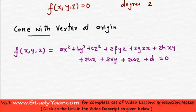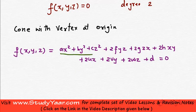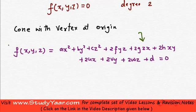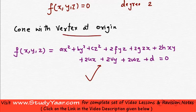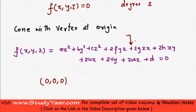Let's find out the equation of a cone with vertex at the origin. We assume f(x, y, z) is of the general form: ax² + by² + cz² + 2fyz + 2gzx + 2hxy + 2ux + 2vy + 2wz + d = 0. We are going to see what pattern emerges when the vertex is at the origin. Since the vertex is at the origin, point (0, 0, 0) lies on the cone and must satisfy this equation.